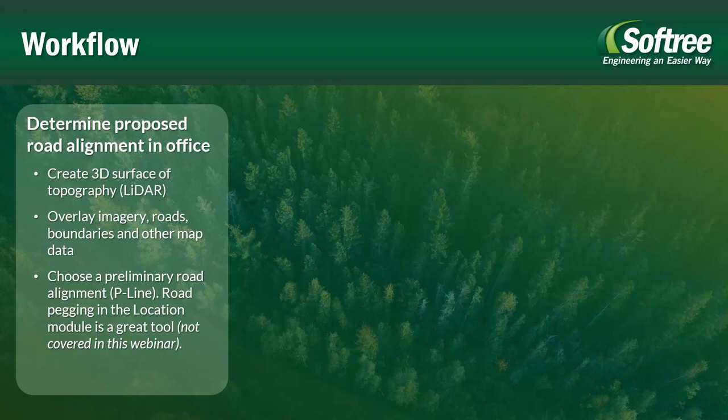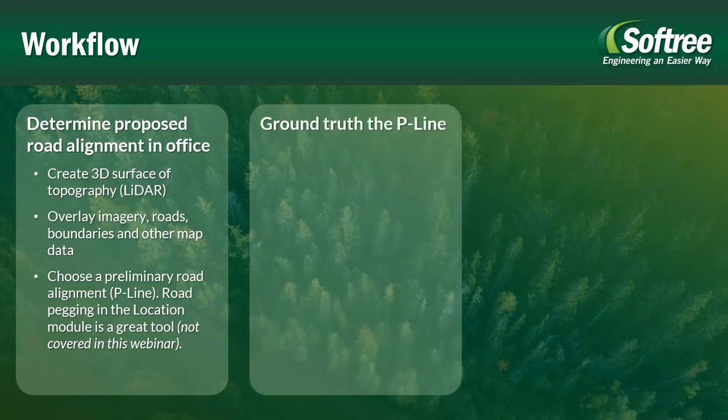We also recommend using something called road pegging — you can do that in the location module. It's a great tool for helping you choose the preliminary alignment. We won't be covering that today, but we've got lots of videos on our YouTube channel covering it. Once we've got that proposed road alignment in the office, out in the field you're going to ground truth your P-line, because working off of LiDAR by itself is often not enough.